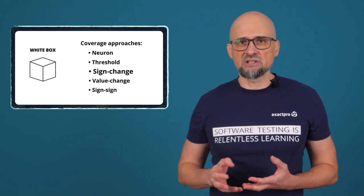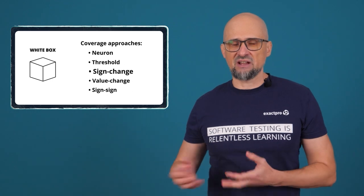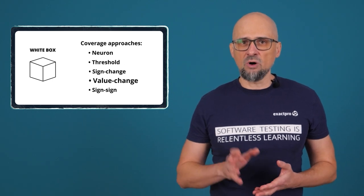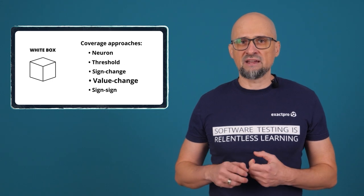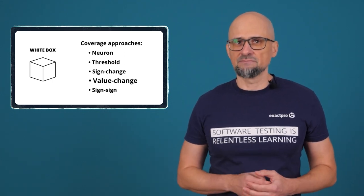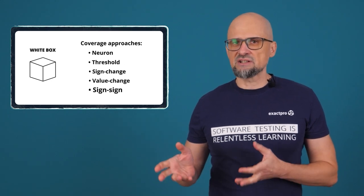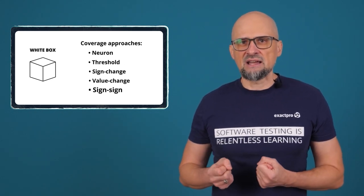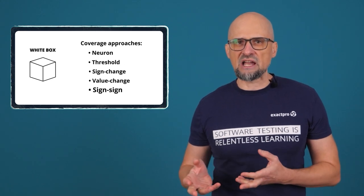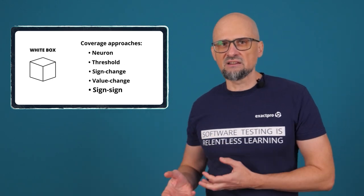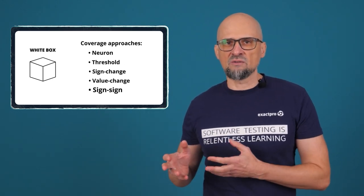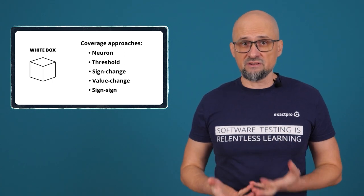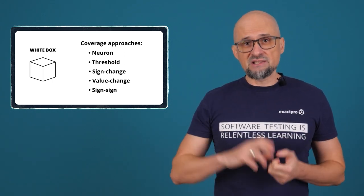Sign change coverage: to achieve full sign change coverage, test cases need to cause each neuron to achieve both positive and negative activation values. Value change coverage: to achieve full value change coverage, test cases need to cause each neuron to achieve two activation values, where the difference between the two values exceeds some chosen value. Sign-sign coverage: this coverage considers pairs of neurons in adjacent layers. For a pair of neurons to be considered covered, a test case needs to show that changing the sign of a neuron in the first layer causes the neuron in the second layer to change its sign, while the signs of all other neurons in the second layer remain unchanged. It is also worth mentioning that researchers have been experimenting on further coverage measures based on layers, so we will see what the future holds.